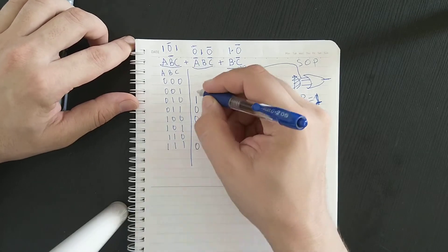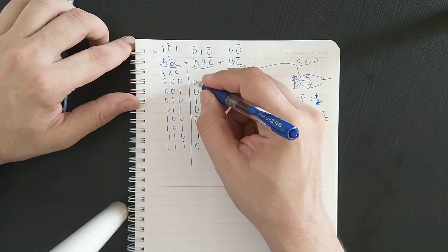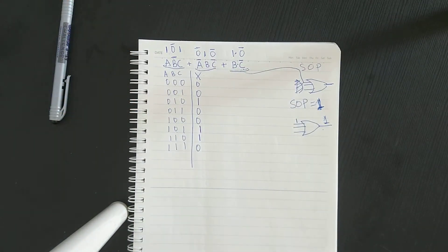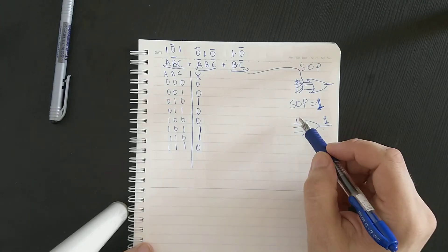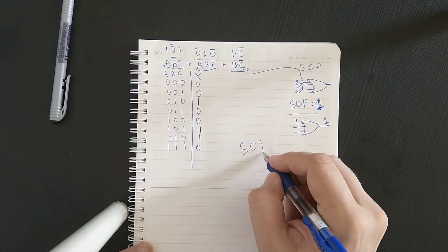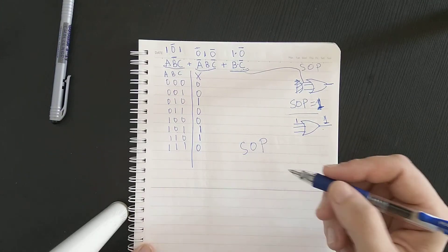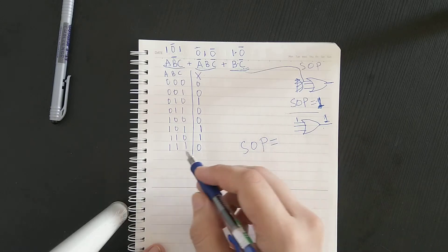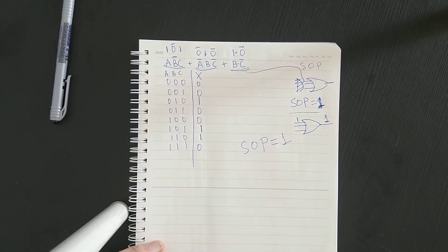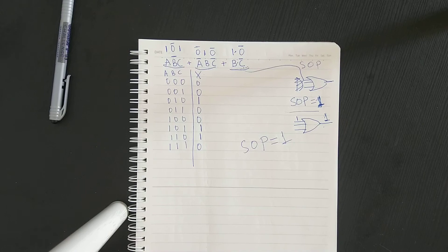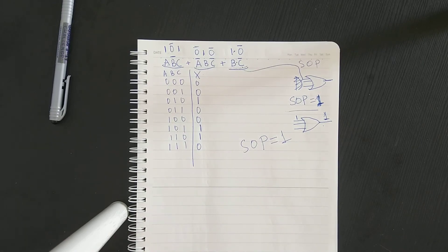Now we have all the cases when the output equals one — the rest are zero. This is the quickest way to find the truth table for the SOP expression. For SOP cases, all you have to do is find the inputs when the output is equal to one.